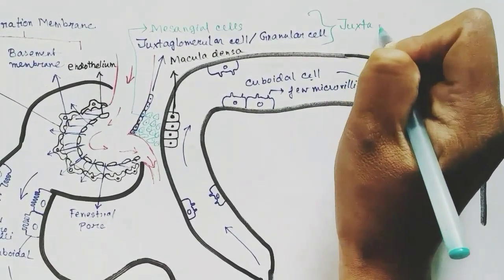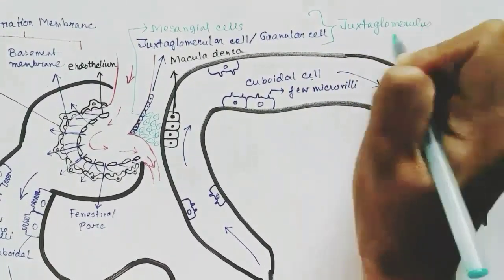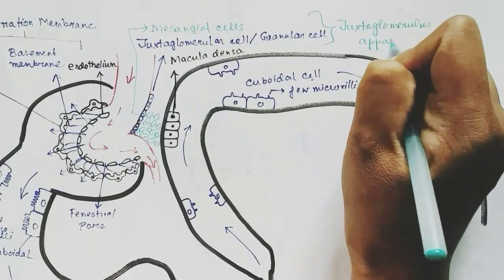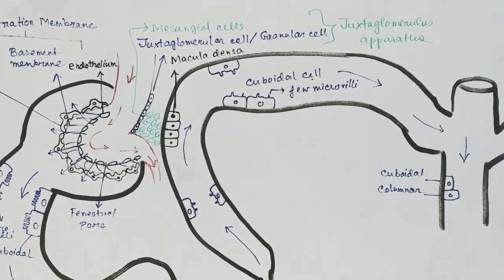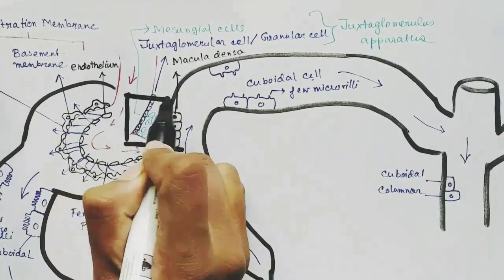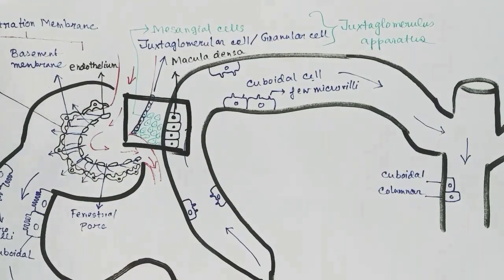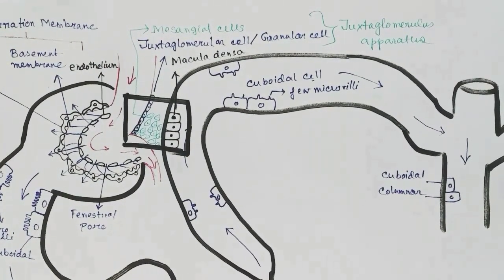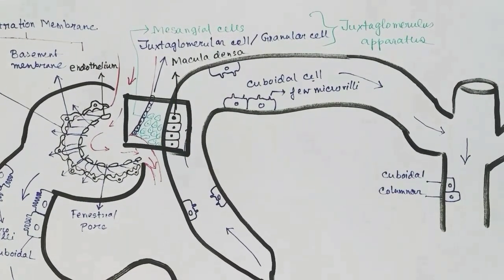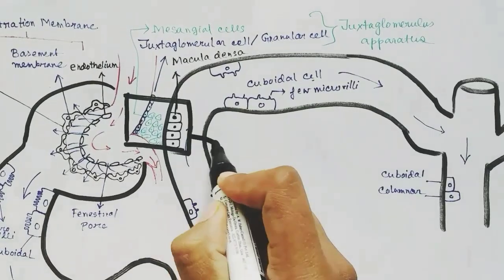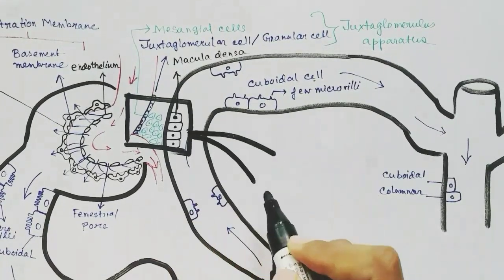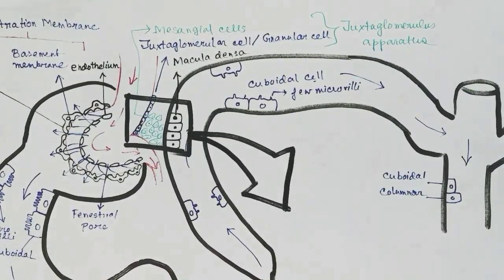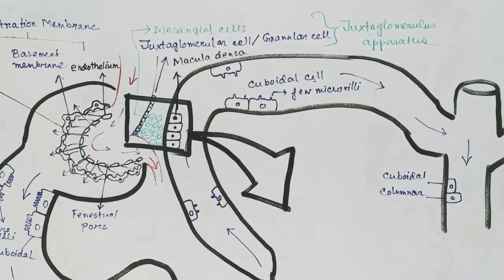These three cells — the juxtaglomerular cells, the macula densa cells, and the mesangial cells — together are called the juxtaglomerular apparatus. We will zoom into this region and discuss more about it.